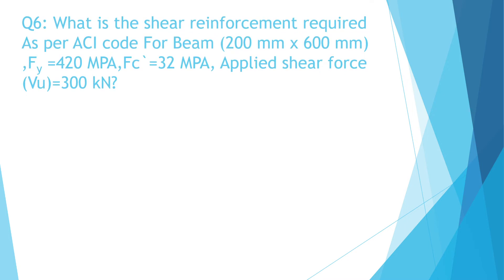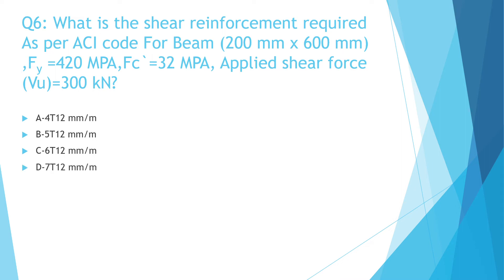Question number six. What is the shear reinforcement required as per ACI code for a beam 200 millimeter by 600 millimeter, Fy equal 420 megapascal, Fc prime equal 32 megapascal, applied shear force equal 300 kN? A: 4T12 per meter, B: 5T12 per meter, C: 6T12 per meter, D: 7T12 per meter. The correct answer is B: 5T12 millimeter per meter. The steps of solution are shown.